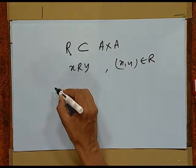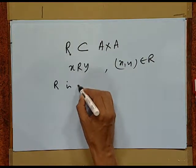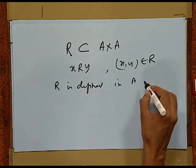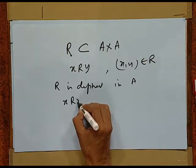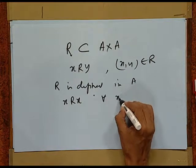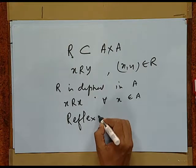If a relation R defined in a set A is such that xRx for all x belonging to A — that is, every element is related to itself — then we say R is reflexive. For instance, in the set of all lines in a plane, the relation 'is parallel to' is reflexive because every line is parallel to itself, while 'is perpendicular to' is not reflexive because no line can be perpendicular to itself. Similarly, the relation 'equal to' is reflexive since everything is equal to itself.